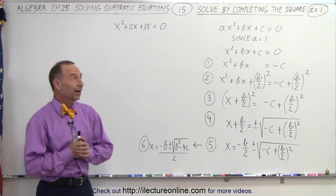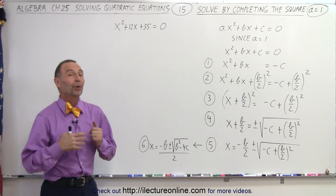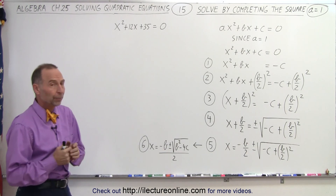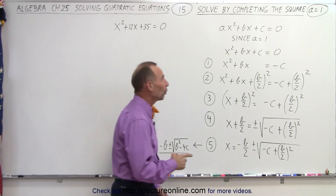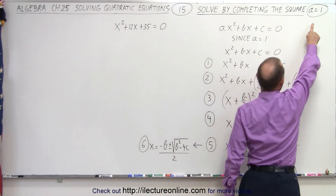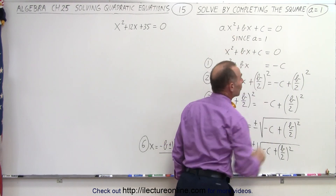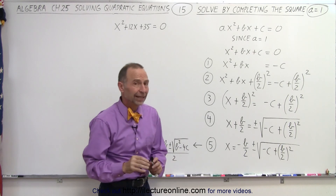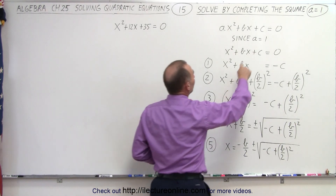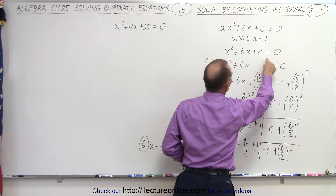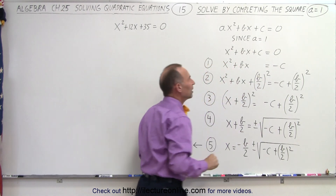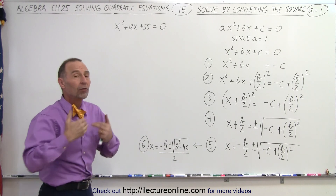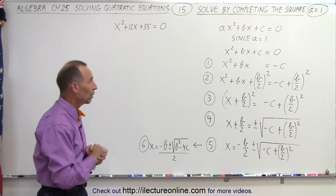Welcome to Electrum Online. Our next method is a very important method called the completing the square method. We're going to start with a special case where the coefficient in front of the x squared term is equal to 1. So our general quadratic equation, ax squared plus bx plus c equals 0, is going to change a little bit. Since we let a equal 1, it becomes x squared plus bx plus c equals 0, and we solve it using the completing the square method.